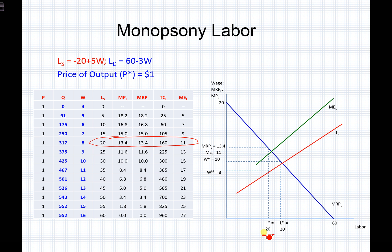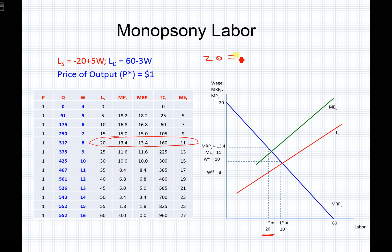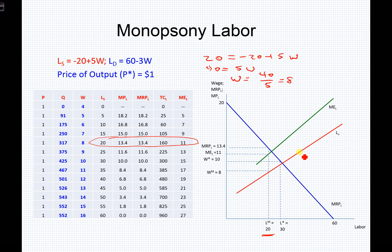Putting 20 units of labor into the labor supply curve to find the wage: 20 equals negative 20 plus 5W, so 40 equals 5W, giving W equals 8. As a monopsony producer hiring 20 workers, I only have to pay them $8 per unit, yet they generate $13.40 per unit in marginal revenue product. That difference — $13.40 minus $8 — is a significant marginal profit margin for the producer.